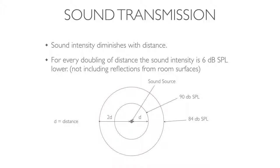Sound intensity diminishes with distance. The relationship is simple: every time you double the distance, you lose 6 dB of sound pressure level. This doesn't hold as well inside buildings or rooms because you get reinforcement from the room — concert halls are designed to reflect sound to the listener — but outdoors this relationship holds pretty well.